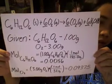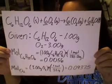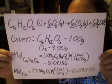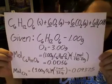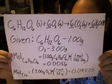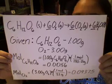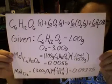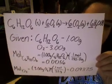We are given that C6H12O6 has 1 gram available in the beginning of the reaction, and oxygen has 3.00 grams that will be available in the beginning of the reaction.